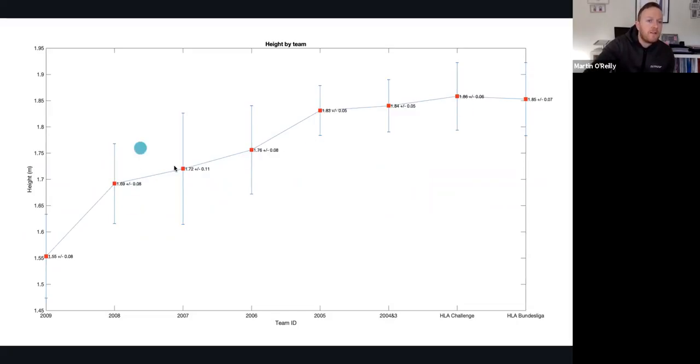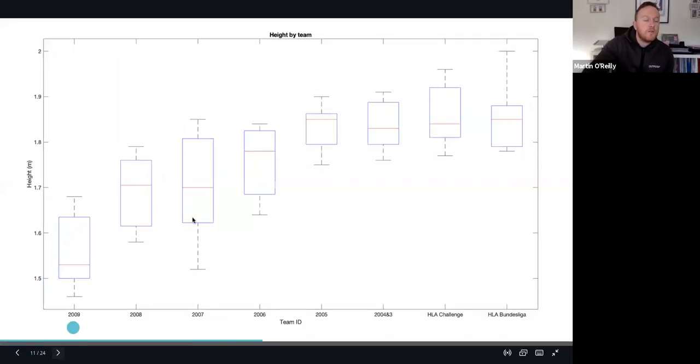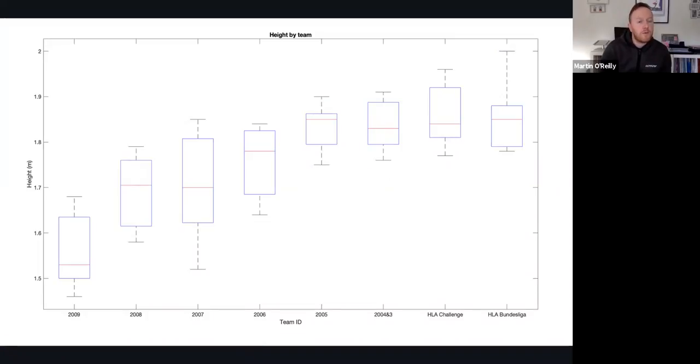Interestingly there was of course huge variance or standard deviation as these whiskers show across all age groups because of the different positions and different levels of maturation and growth in the players. This just shows the same information in the box plot, again showing a high level of variance and also crossover between each group, particularly the older groups from 2005 onwards the players seem to have reached maximal height.